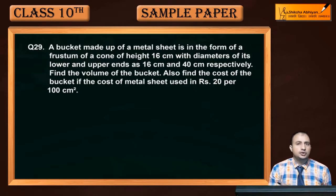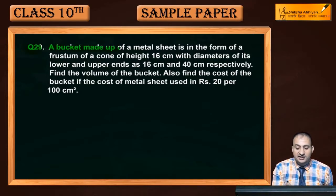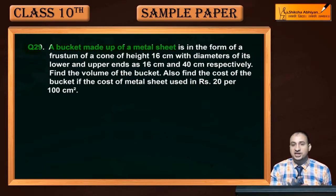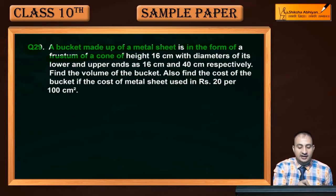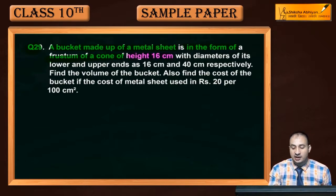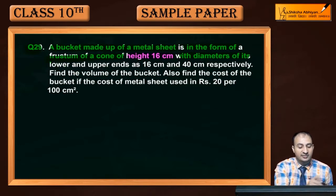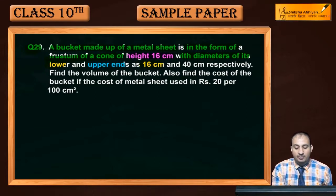Now see Question 29. A bucket is made up of metal sheet and is in the form of a frustum of a cone. The height is 16 cm, the diameter of its lower end is 16 cm, and the diameter of its upper end is 40 cm respectively.